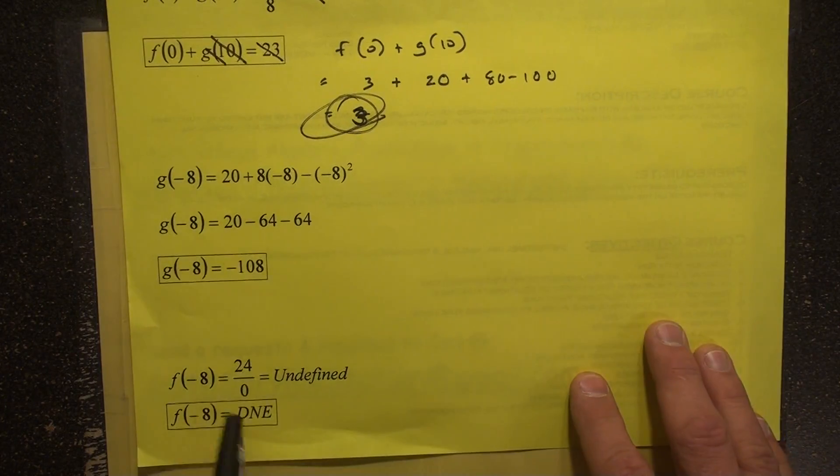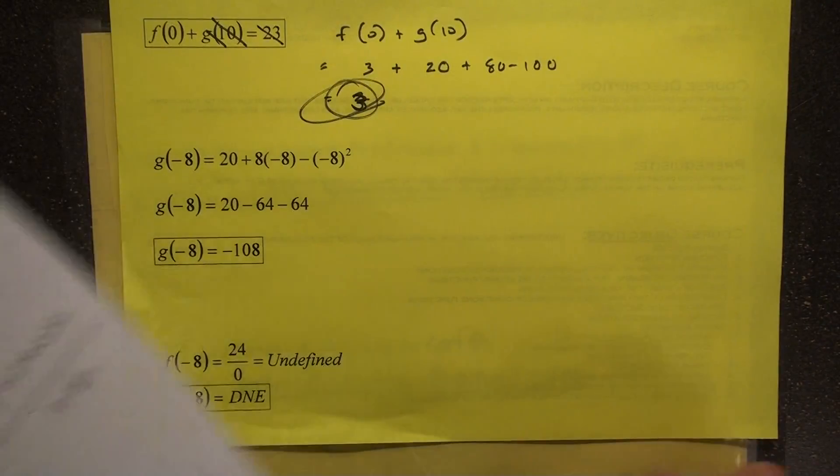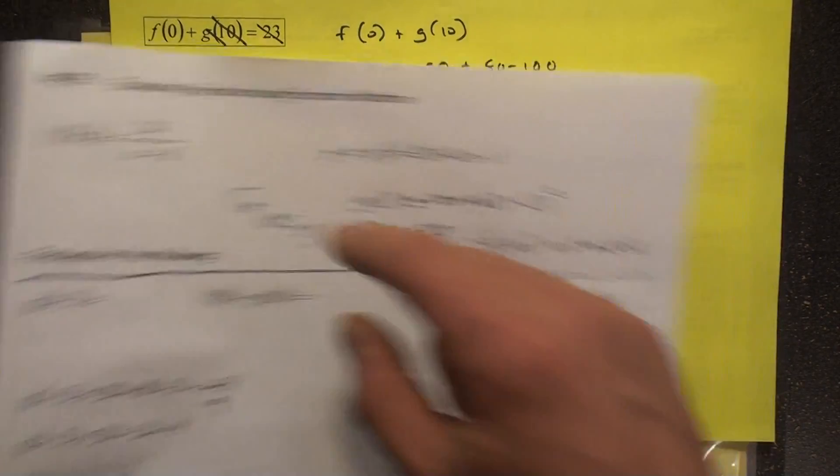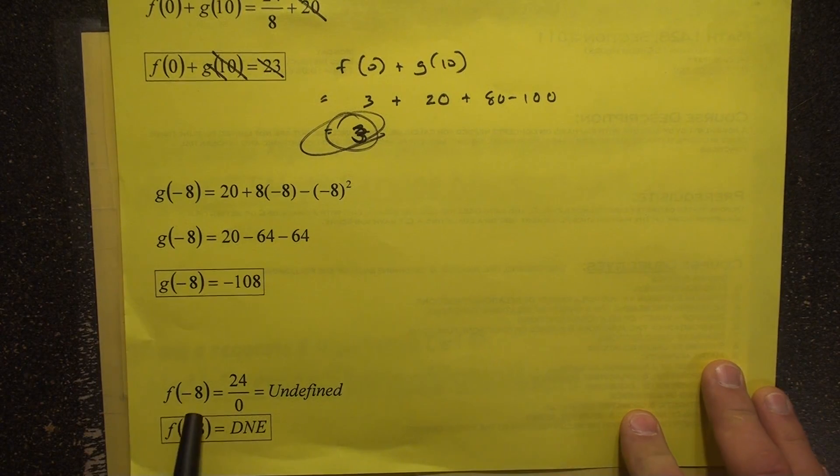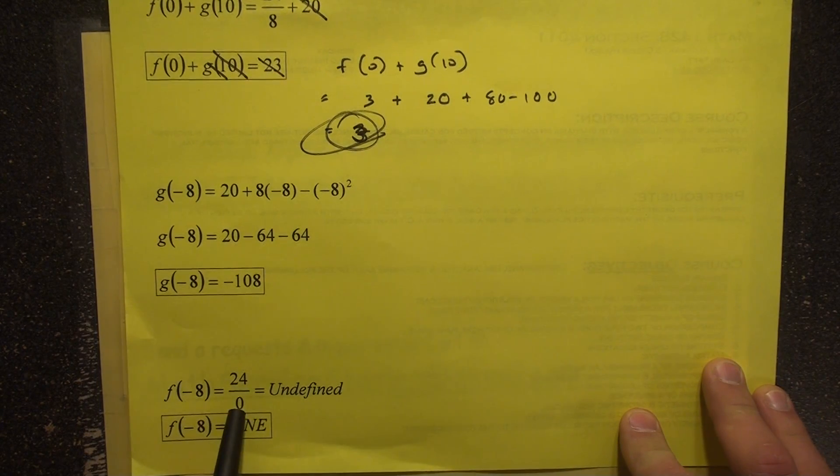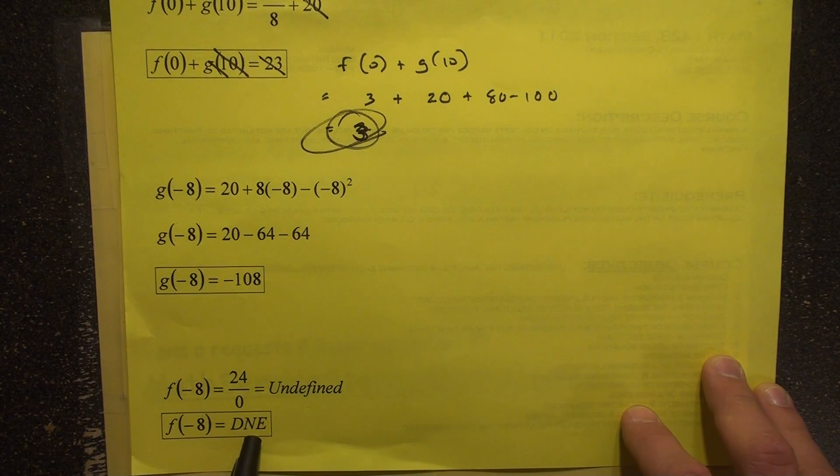Here's the last one. This is the one that's probably the coolest one on this page here. If you plug in negative 8 in for x for the f function, the f equation, plug in negative 8, you're going to have 24 divided by 0, which is an undefined amount. Therefore, f of negative 8 does not exist.